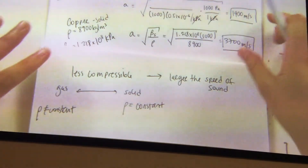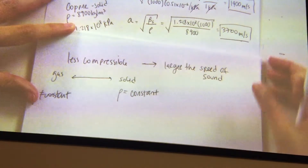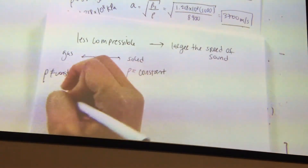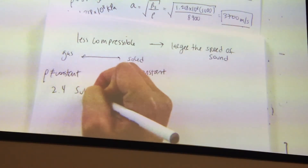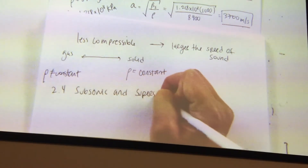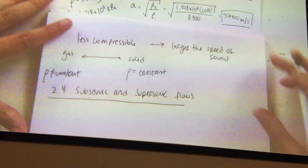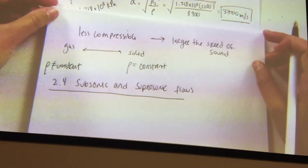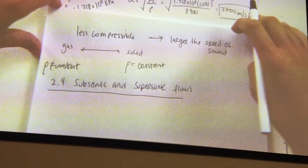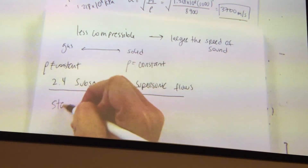Okay, so now that we know the speed of sound and how it works, we can talk about subsonic and supersonic flows in compressible flows. That would be Section 2.4 — subsonic and supersonic flows. In order to analyze these flows, remember this chapter is about how the wave sounds and how the wave propagates across the medium.